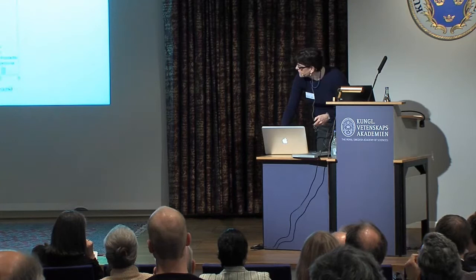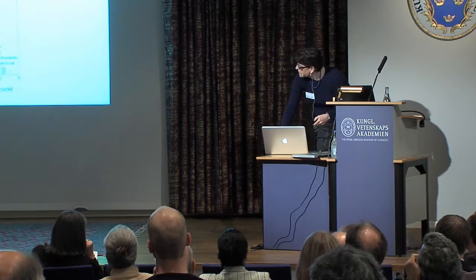We also know there was a lot of bombardment of the Earth in the earliest part of our solar system's history. From the lunar crater record, the impact rate fell off exponentially after about the first billion years. So conditions on the surface of the Earth were very harsh, with a lot of radiation — meaning things generated in situ would have had a hard time surviving.